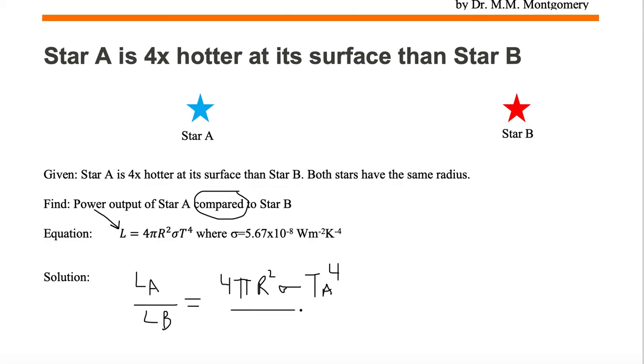And then we have to do the same thing for the denominator. We've got 4π. Once again, radius is the same. So I'm just going to put R².